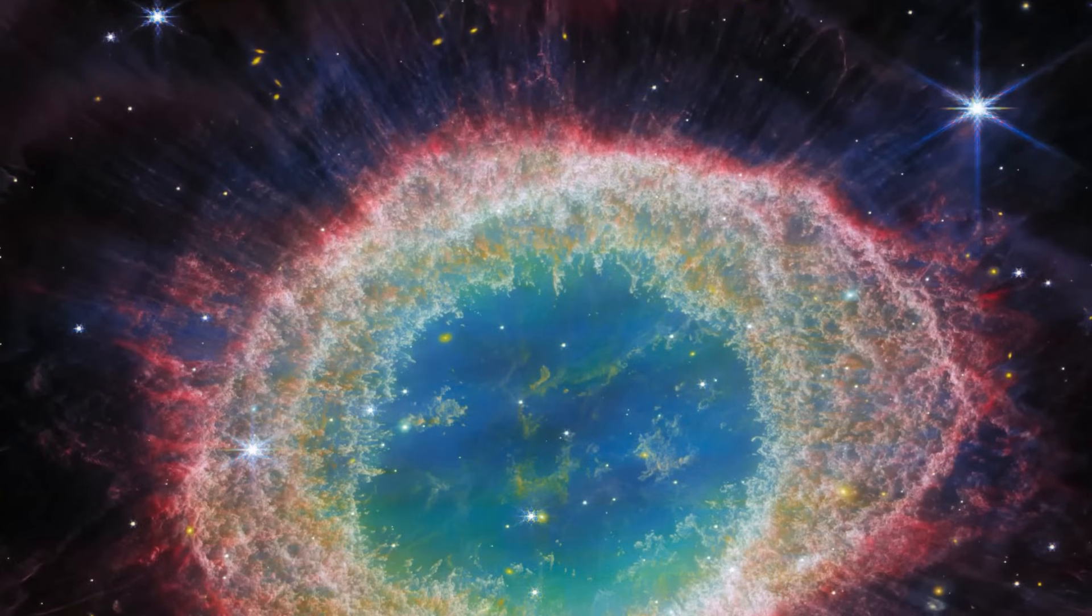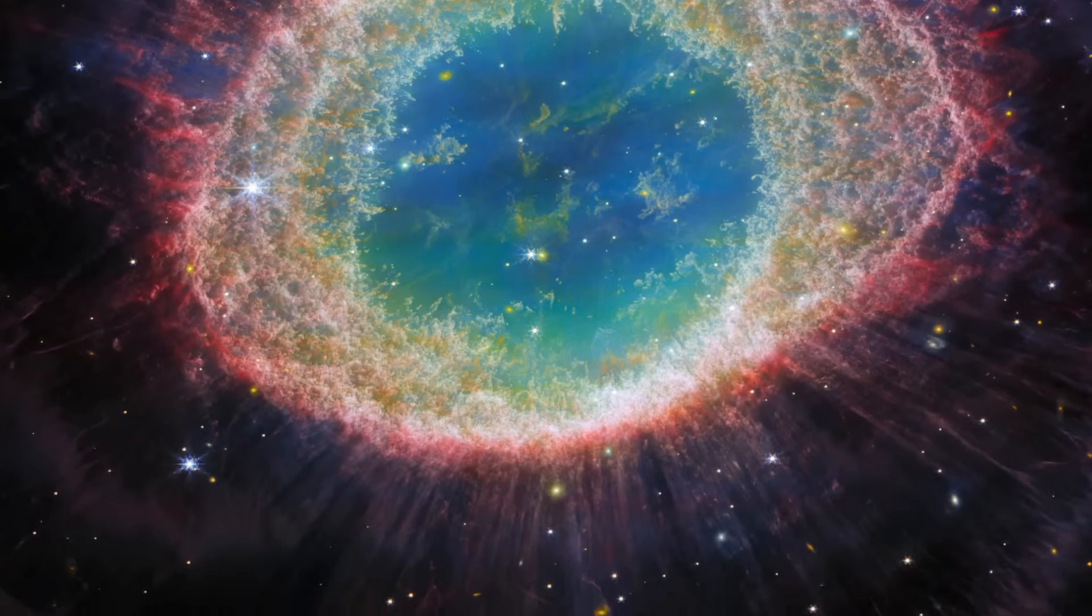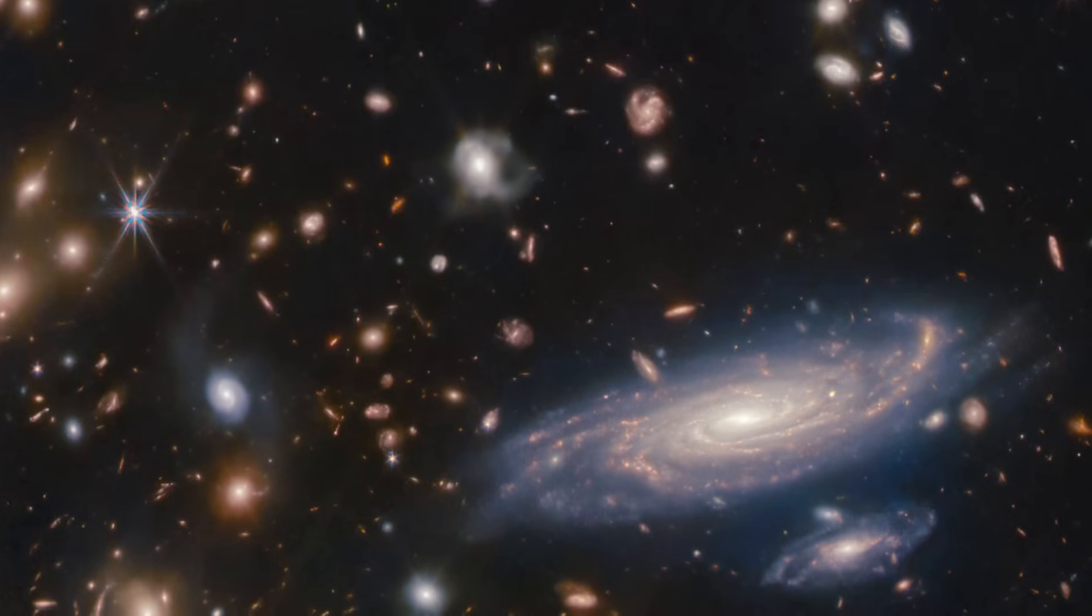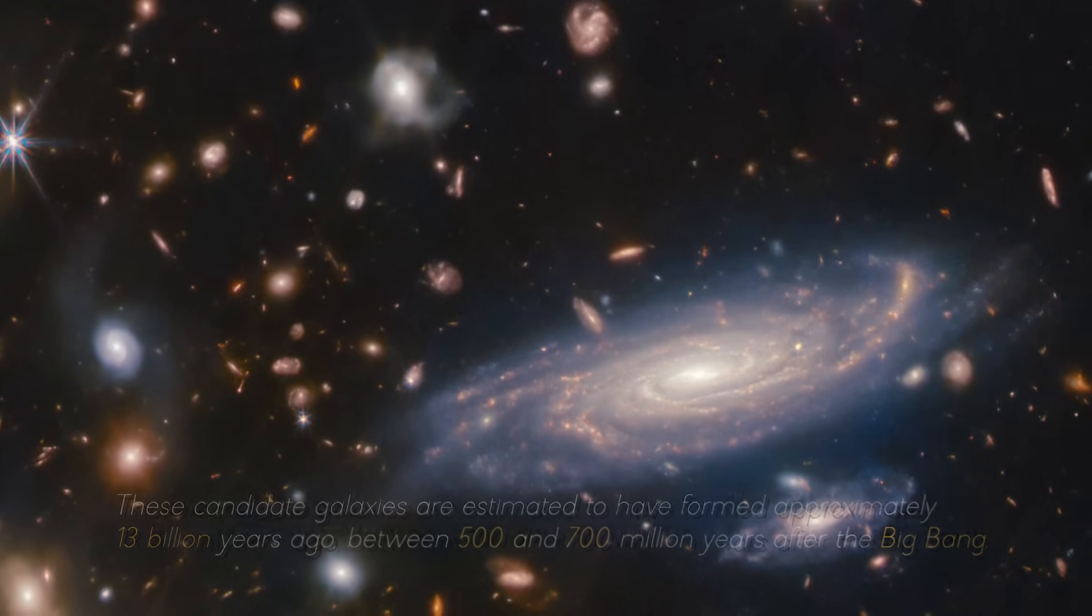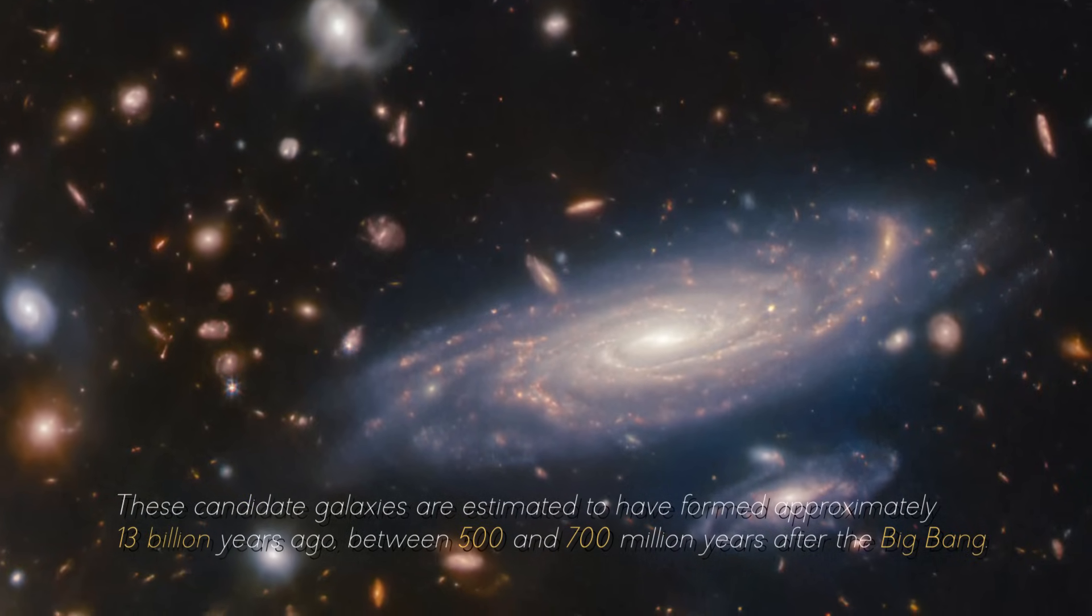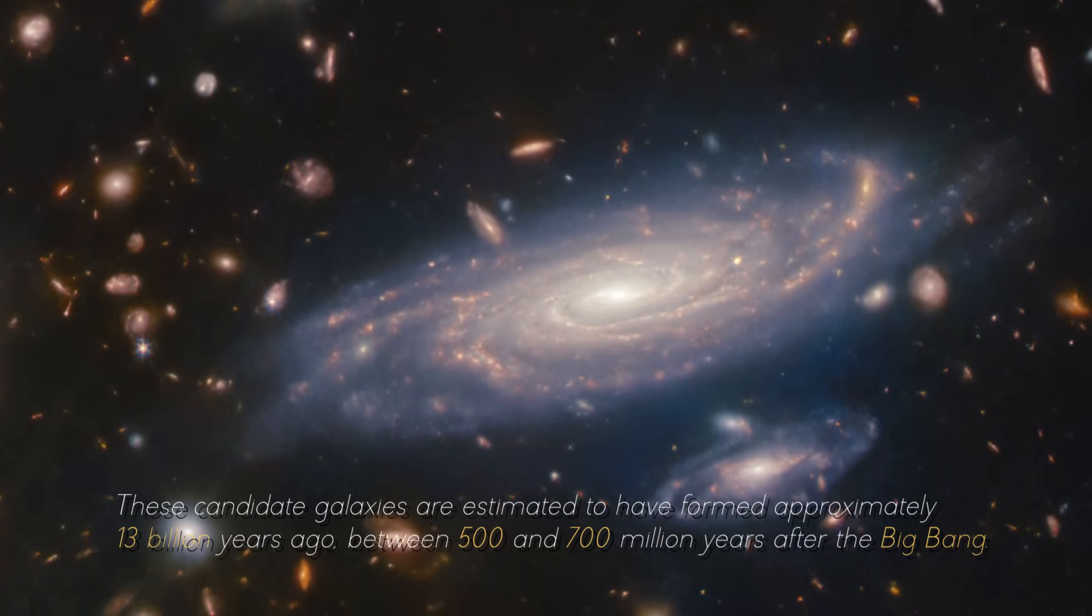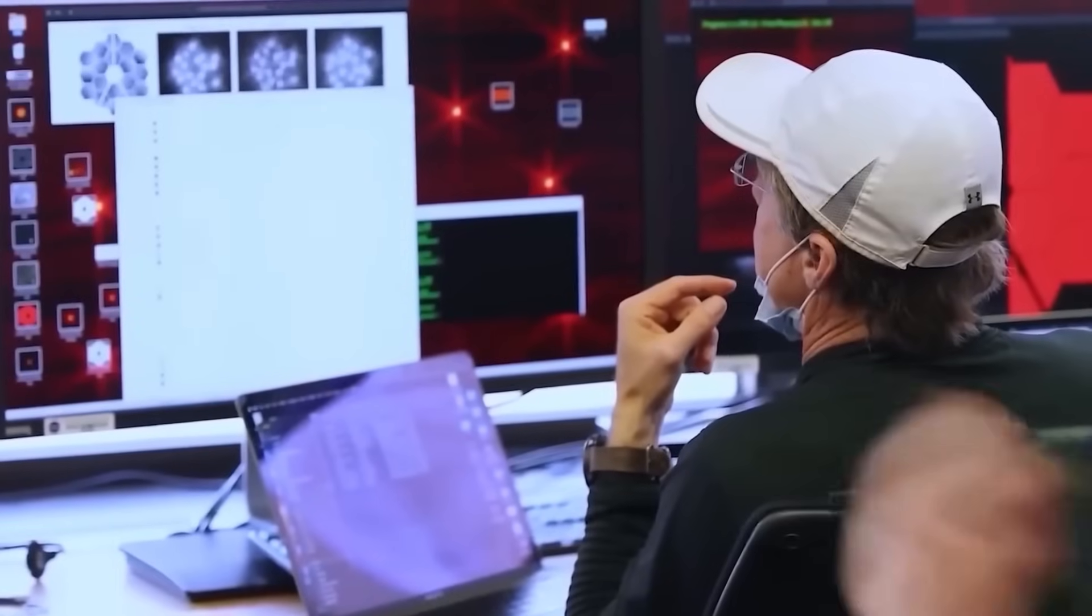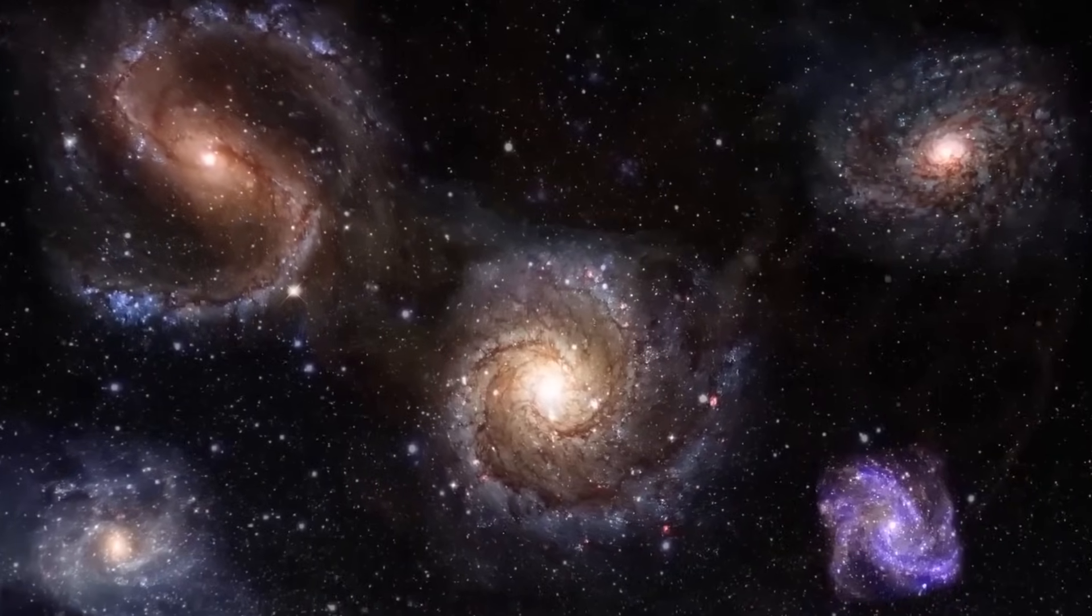However, images captured by the James Webb Space Telescope are challenging the Big Bang theory, as they show galaxies of enormous sizes that appear not to have been able to exist or are not consistent with the Big Bang theory. These candidate galaxies are estimated to have formed approximately 13 billion years ago, between 500 and 700 million years after the Big Bang. Astronomers expected to observe young, small galaxies in this region of Earth's early space.